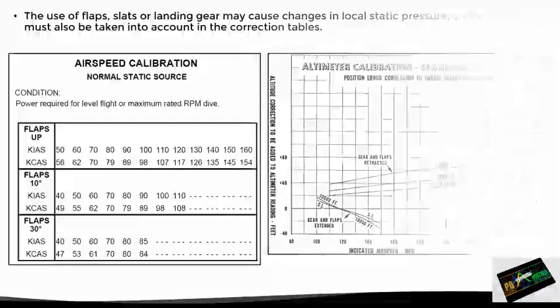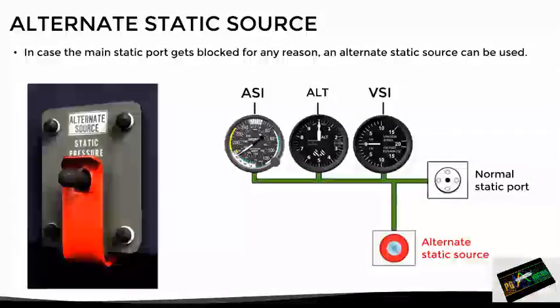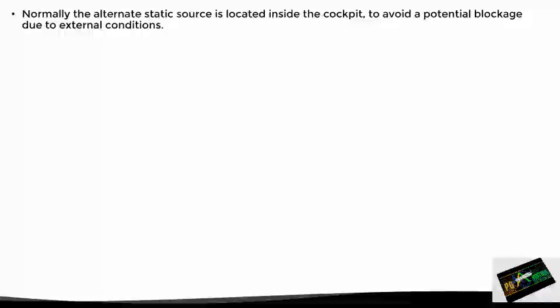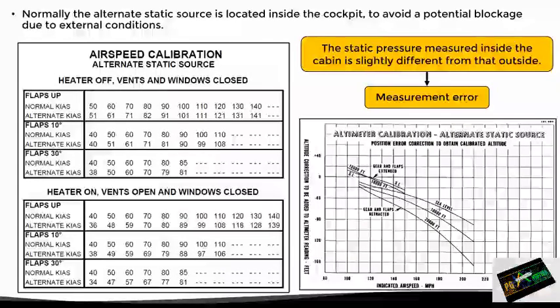Well, for this case we have an alternate static source, which is basically an additional static port connected to the system that can be activated by means of a switch in the cockpit. However, this alternate static port has a peculiarity: it is normally located inside the cabin to avoid a potential blockage due to external conditions. The problem is that the static pressure measured inside the cabin is slightly different from the exterior static pressure, so we will have a slight error in the measurement. This error is taken into account in the calibration tables; however, make sure that the calibration table you are using is for the alternate static source instead of the normal one.